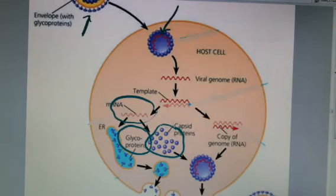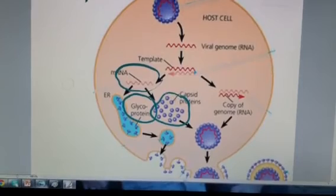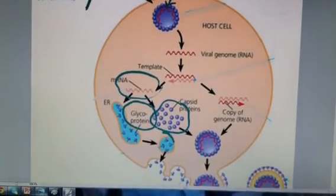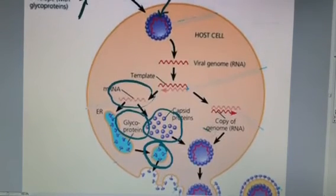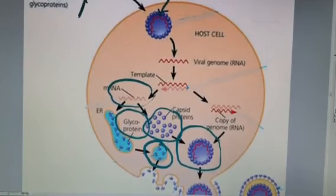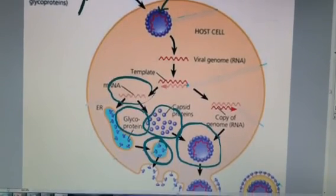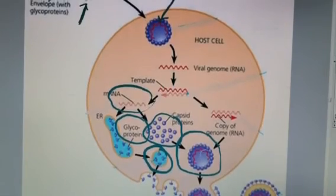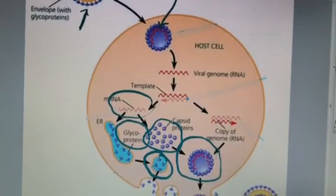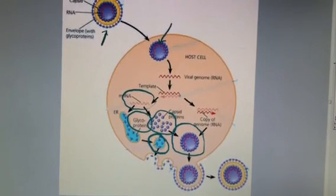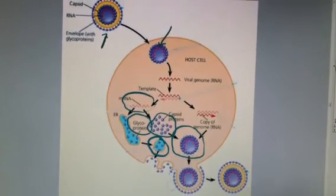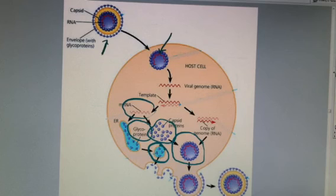By exocytosis, a little vesicle with the glycoproteins is going to fuse with the cell membrane. The proteins made during translation form the new protein coat of this virus, and the RNA is made during transcription. What we get is a virus exiting by exocytosis with glycoproteins on a membrane derived from the host cell, along with brand new RNA genetic material and a capsid — fully functioning and ready to go infect another eukaryotic cell.